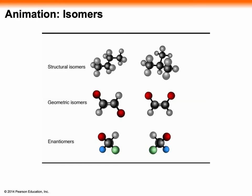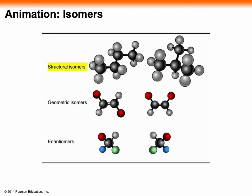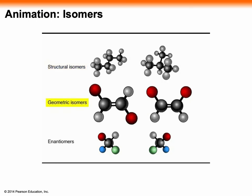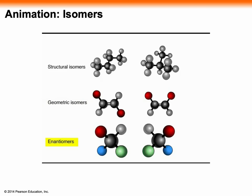Three types of isomers are: structural isomers, which differ in the covalent partnerships between their atoms; geometric isomers, which vary in arrangement of atoms around the double bond; and enantiomers, which are molecules that are mirror images of each other, like left and right hands.